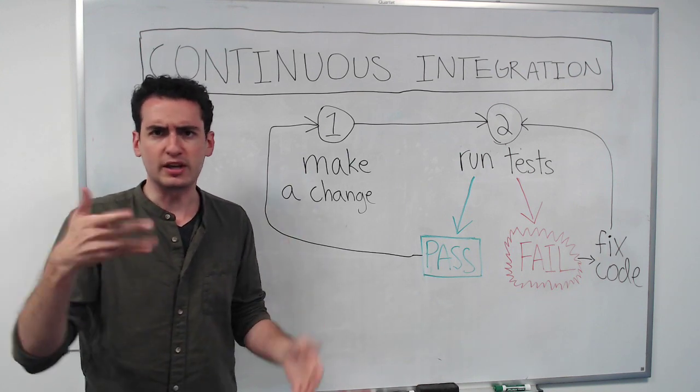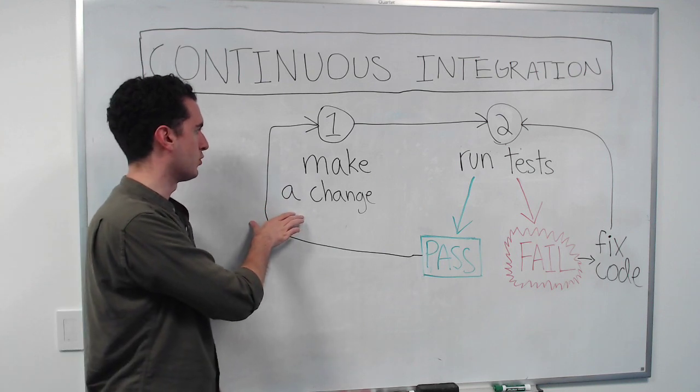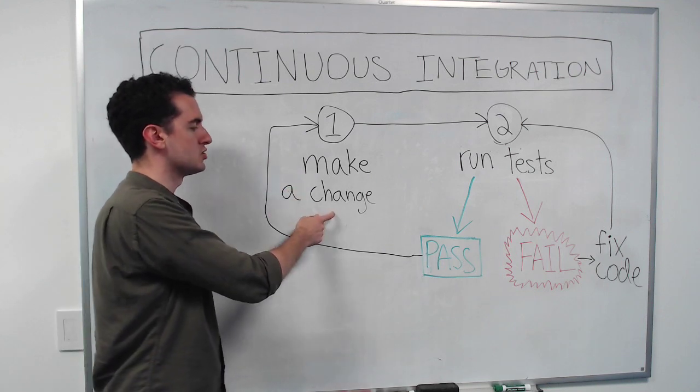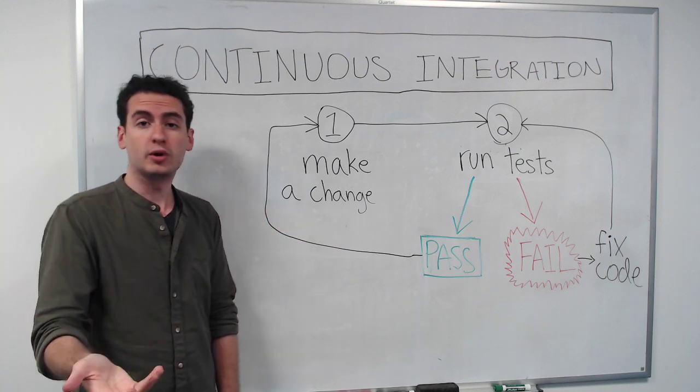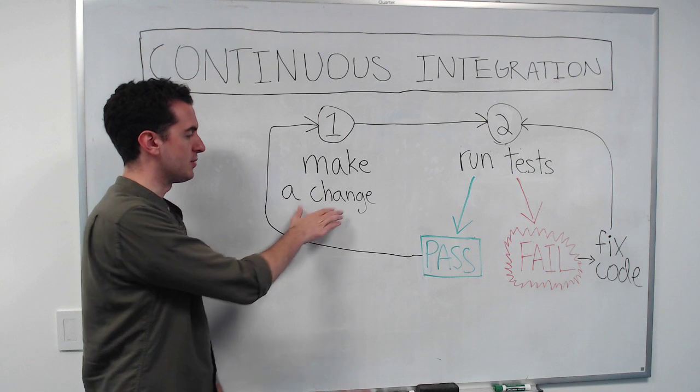So what does that look like in practice? I've drawn this beautiful flowchart up here for you. Step one is you make a change, and this is something maybe on GitHub you make a feature branch, you push it up, submit a pull request, that's the change that I'm talking about here.